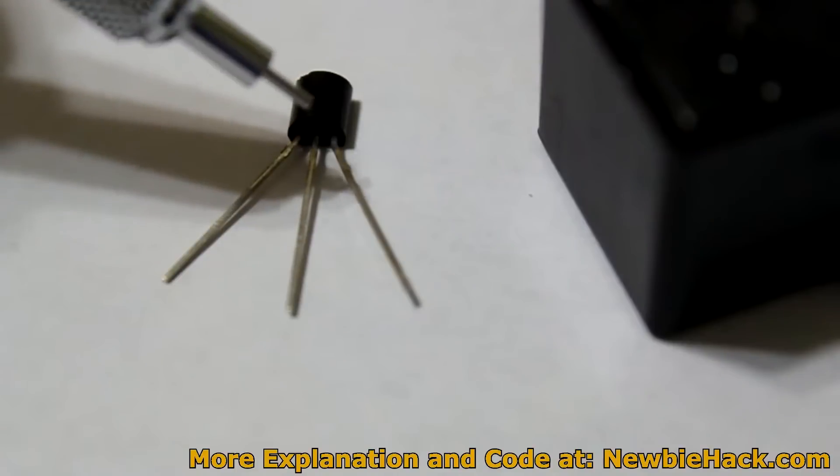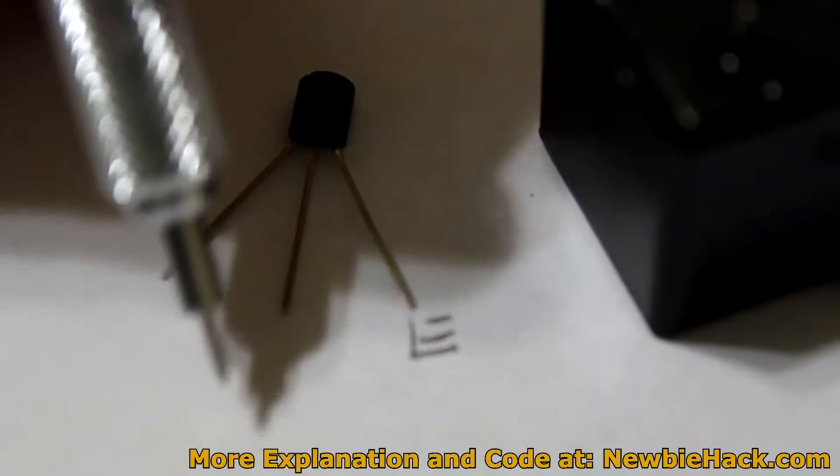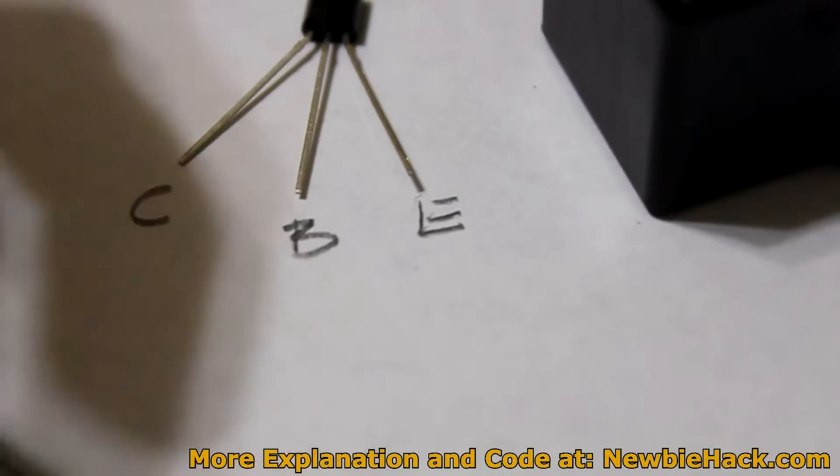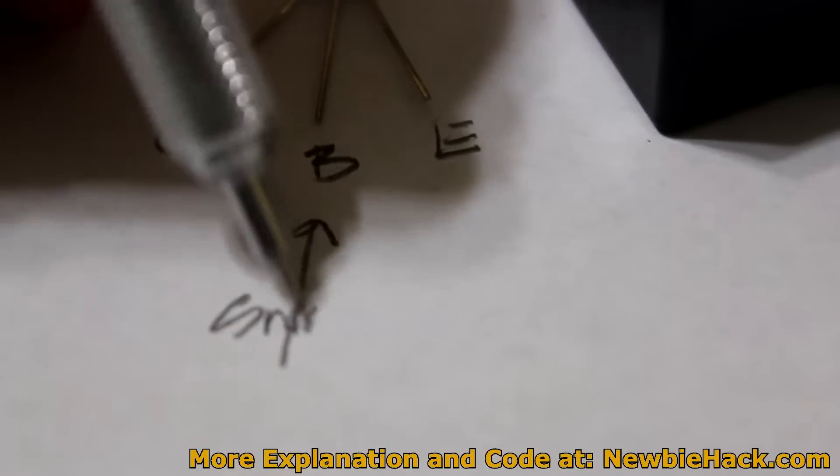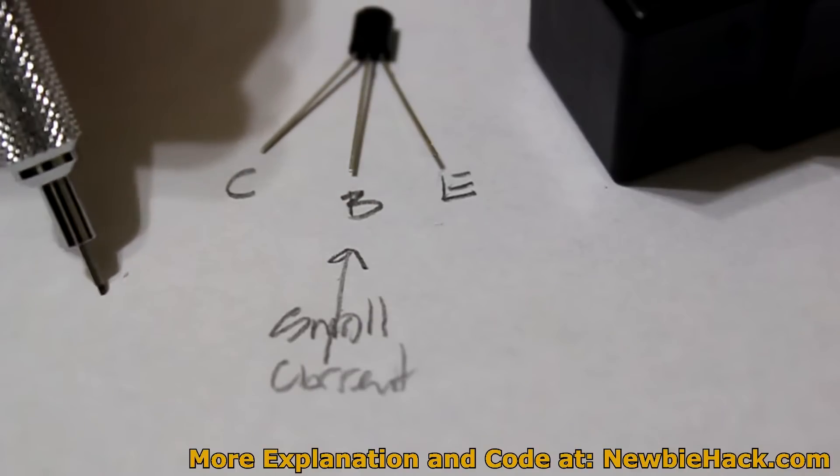With this particular type of transistor, we have the emitter, we have the base, and we have the collector. The base is what will receive the very small current. And the large current will pass through the collector and out of the emitter.